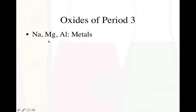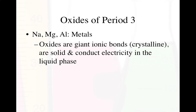Looking across period 3 — sodium, magnesium, aluminum, silicon, phosphorus, sulfur, chlorine, argon — argon is unreactive. Sodium, magnesium, and aluminum are metals. Their oxides — Na₂O, MgO, and Al₂O₃ — are giant ionic bonds: crystalline, solid, and they conduct electricity when liquid or dissolved in water. Sodium and magnesium oxides dissolve in water to form basic solutions: Na₂O reacts with water to form NaOH.